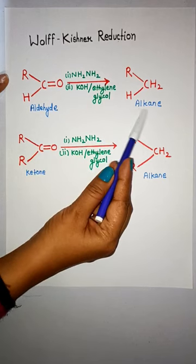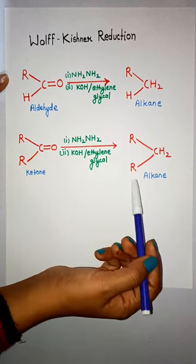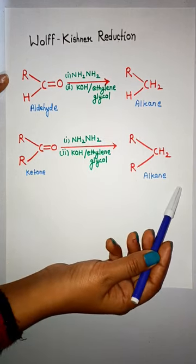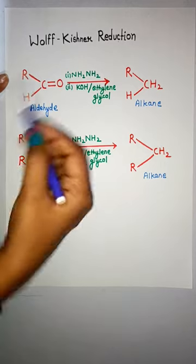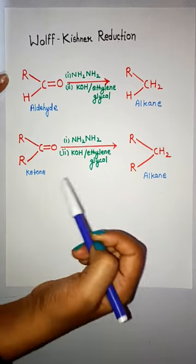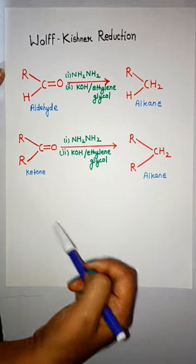Alkane is formed as a product in both reactions. This is about Wolf-Kishner reduction.